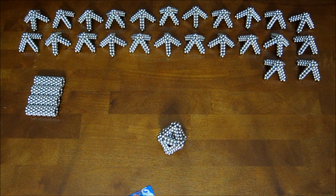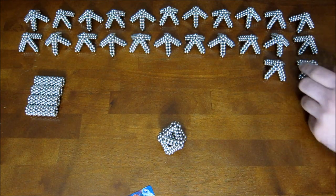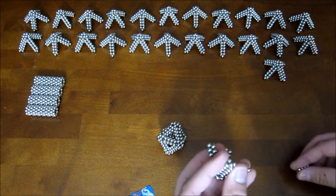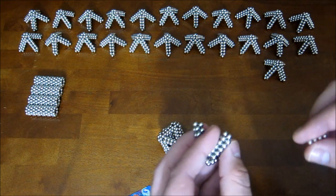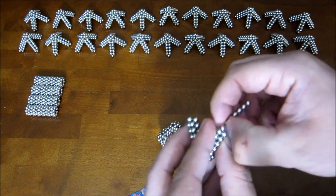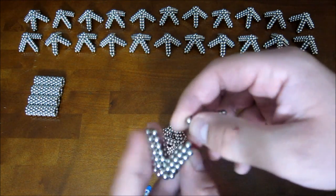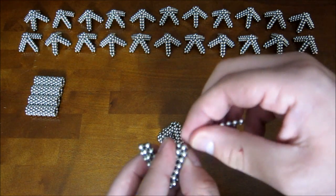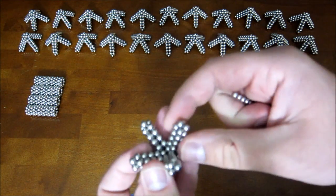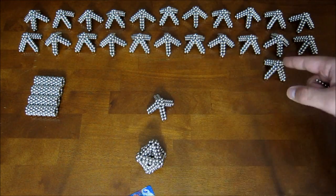Now what you want to do before you get any farther is the second layer is going to be made up of six of these. But the way you build them is actually the edges are too long for the second layer. So on six of these you want to just take two magnets off of every leg of these corner pieces so that they look like this. And you want to make six of these.